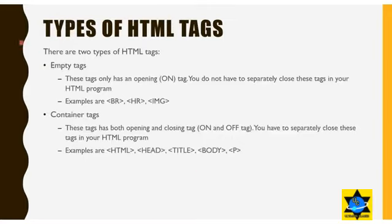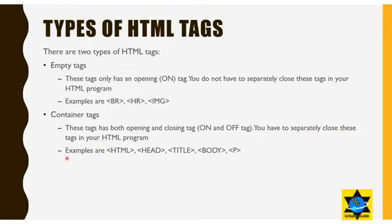There are two types of HTML tags. First is the empty tag — these tags only have an opening tag and do not need to be separately closed. Examples are BR, HR, and the image tag. Second is the container tag — these tags have both opening and closing tags and must be separately closed. Examples are HTML, head, title, body, and paragraph tags.